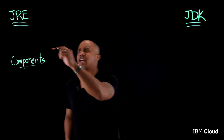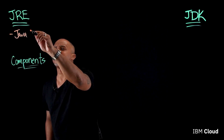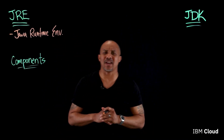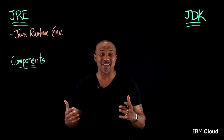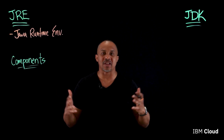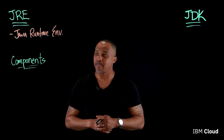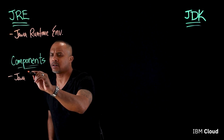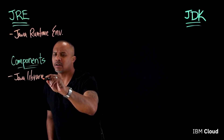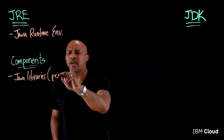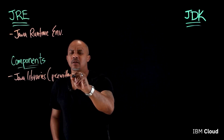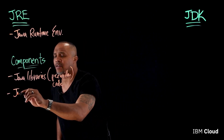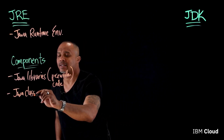Now the JRE stands for the Java Runtime Environment. And as you can infer from the name, it really means a set of software that's there to help Java applications run. Now the components of the JRE include the Java libraries, which you can consider to be more like pre-written code. Next, we'll have the Java class loader.